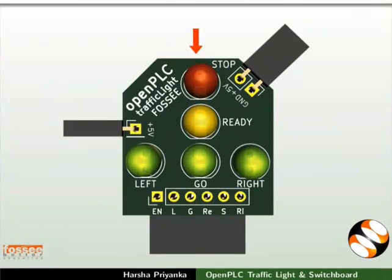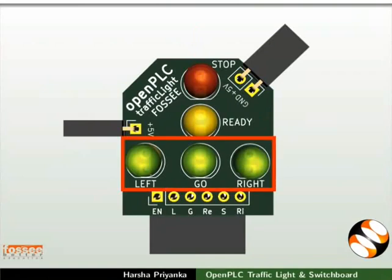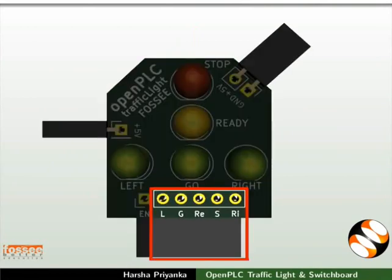The module has one red LED marked as 'top' and one yellow LED marked as 'ready'. At the bottom, it has three green LEDs marked as 'left', 'go', and 'right'. You can access all these LEDs using the connectors present below.